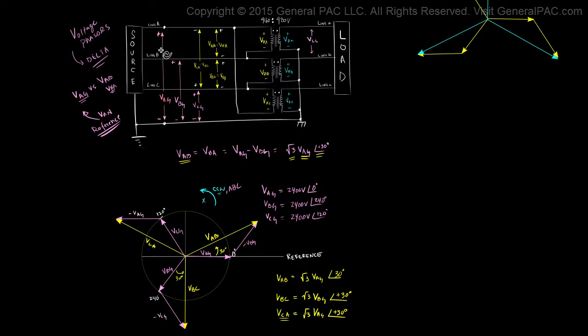VAG is the voltage across line A and ground. VBG is the voltage across line B and ground.